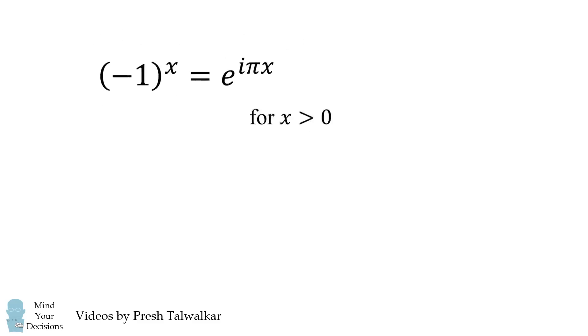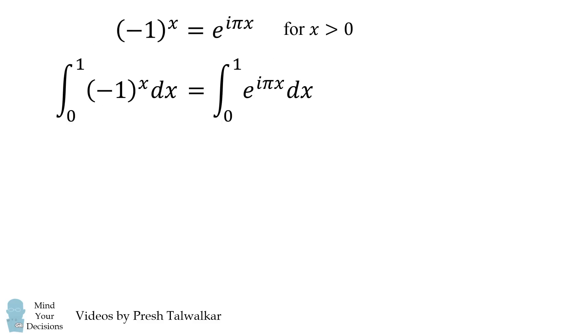We're now ready to evaluate our integral. We substitute in what we just derived, and now we need to take this integral of e to the power of i times pi times x. This is routine. It'll be e to the i pi x all over i times pi, and we want to evaluate this from 0 to 1.